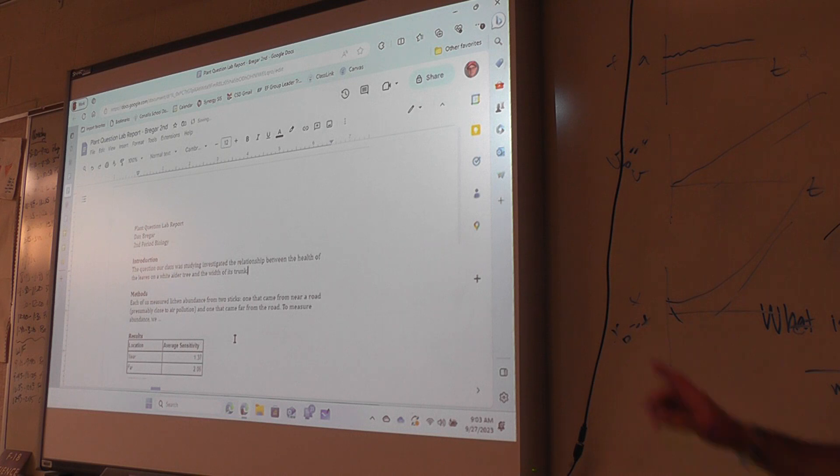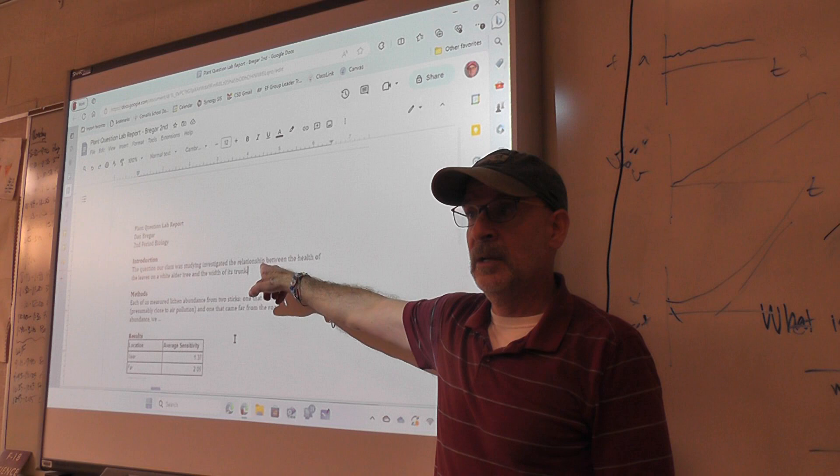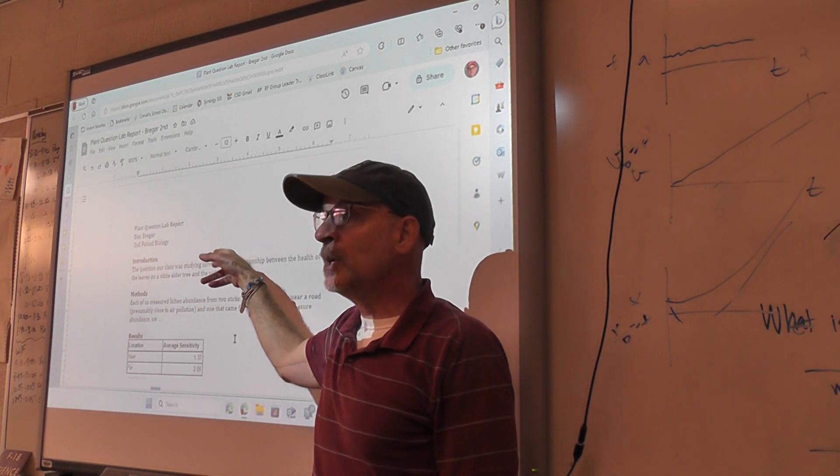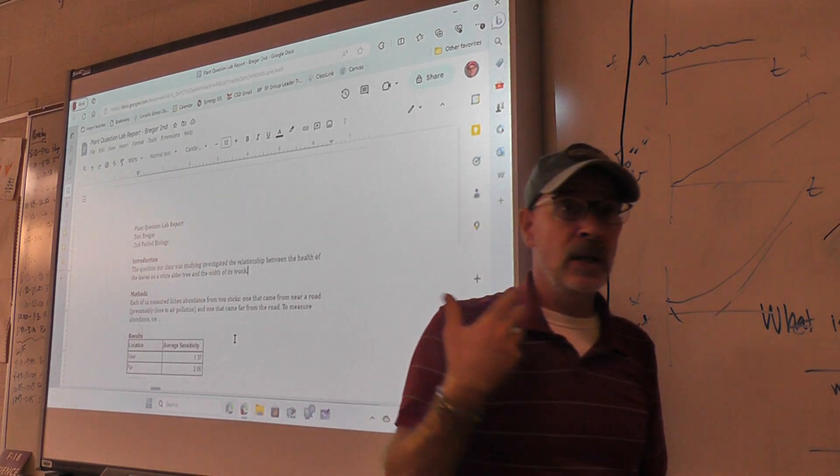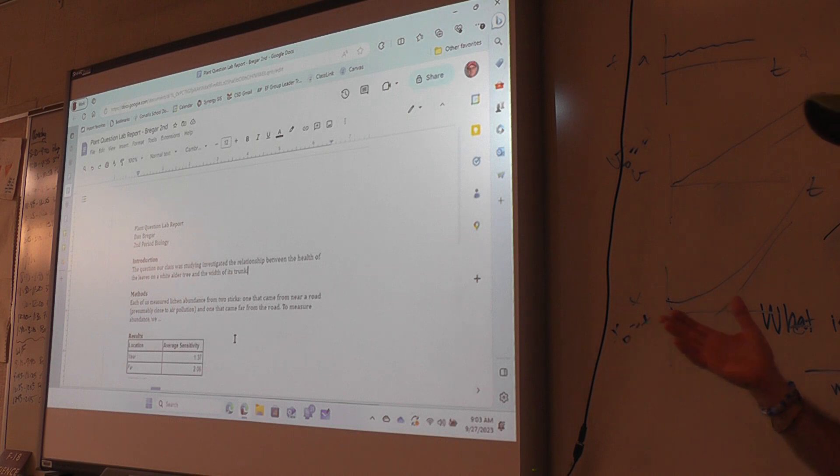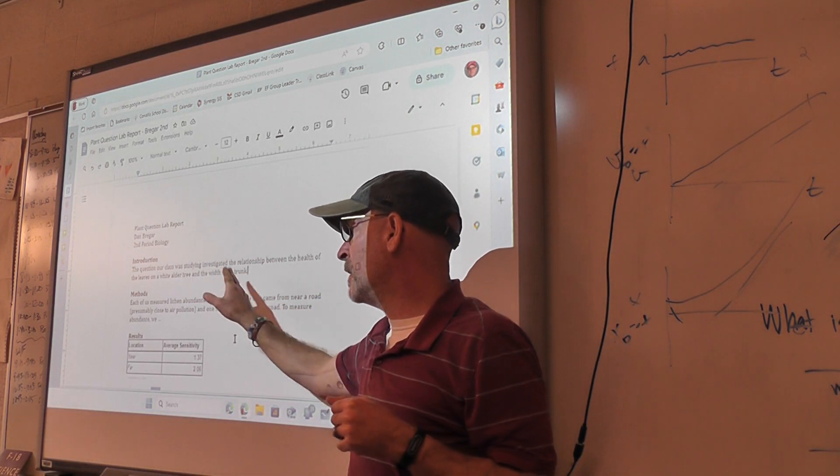and then I'm going to delete all of this stuff because we weren't looking at lichens or pollution. We were looking at the health of the leaves on a white alder tree and the width of its trunk. And we'll come back to this in a couple minutes because we're not done with the introduction, but this is how you can start, and this is how you can start all of them. Every time we do a lab in this class, every time we do an activity, there's going to be something we're trying to figure out. So the very first thing in your introduction should be what we're trying to figure out.